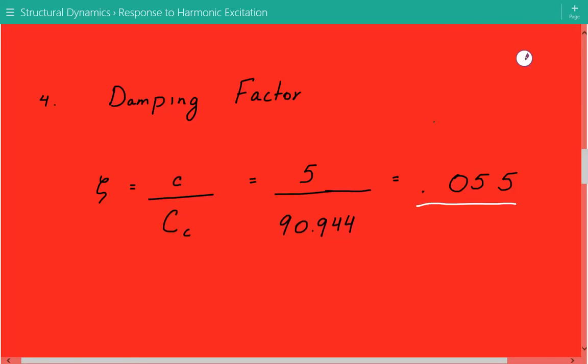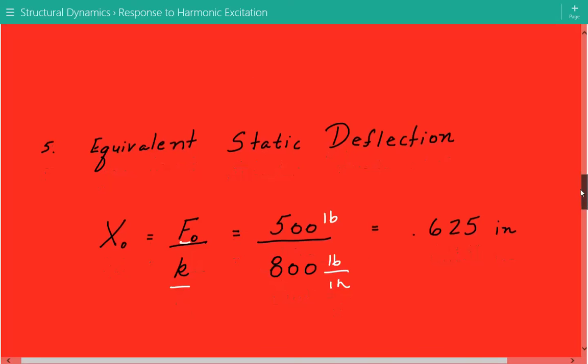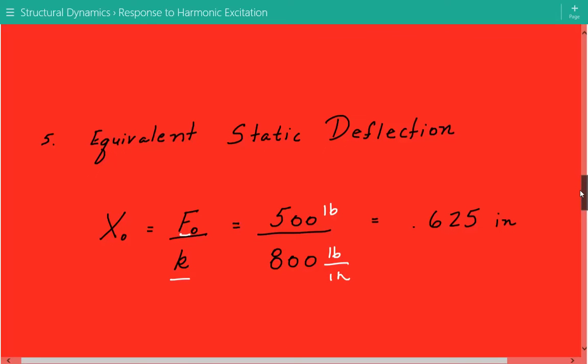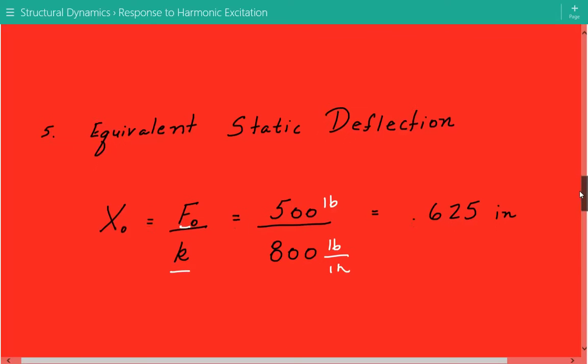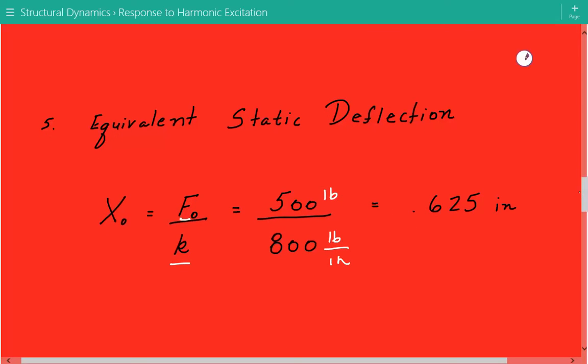After calculating the damping factor, we'll now calculate the equivalent static deflection. The reason will be more apparent after this step. The equivalent static deflection equals the amplitude of the harmonic force F₀ divided by the stiffness, so 500 pounds divided by 800 pounds per inch equals 0.625 inches.